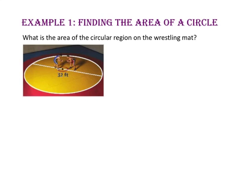To find the area, we know we need the radius. Since the diameter of the wrestling mat is 32 feet, we need to start by finding the radius. We know the radius is half the diameter, or 32 feet divided by 2, which gives us a radius of 16 feet.